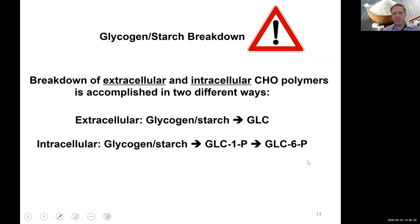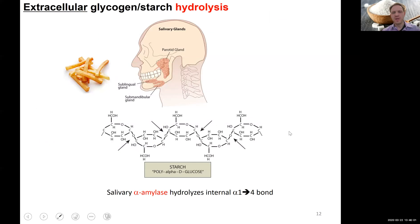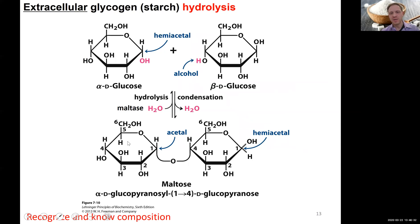Now back to breakdown. There are major differences in how we break down extracellular — dietary — versus intracellular carbohydrate polymers. Extracellular polymers, regardless of whether starch or glycogen, are broken down to free glucose. Intracellular polymers are broken down to glucose-1-phosphate, then isomerized to glucose-6-phosphate to enter glycolysis. For example, if you've just had french fries, breakdown begins in your mouth: saliva contains alpha-amylase, a hydrolase that uses water to break the α-1,4 glycosidic bonds, releasing free glucose.